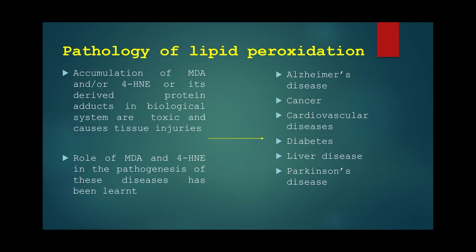Regarding the pathology of lipid peroxidation, accumulation of MDA, 4-HNE, and their derived protein adducts in biological systems are toxic and cause tissue injuries. The role of MDA and 4-HNE in pathogenesis has been demonstrated across several diseases, including Alzheimer's disease, cancer, cardiovascular disease, diabetes, liver diseases, and Parkinson's disease.